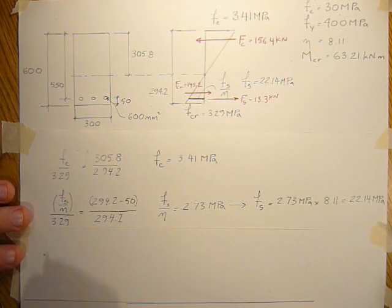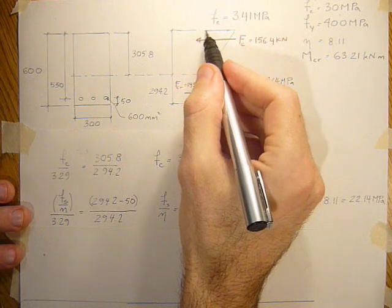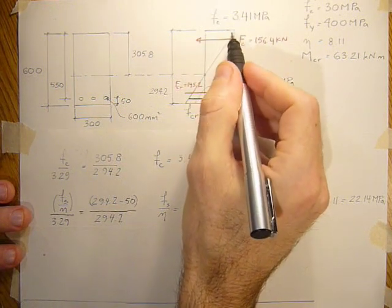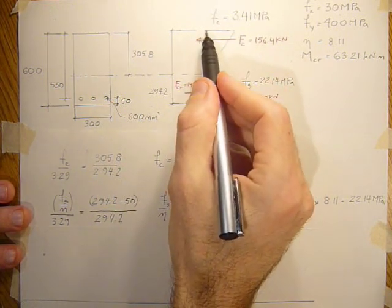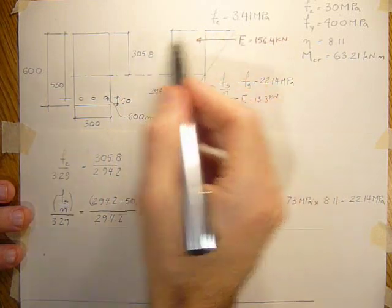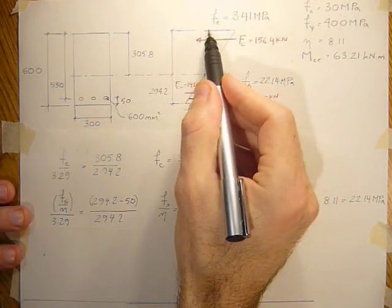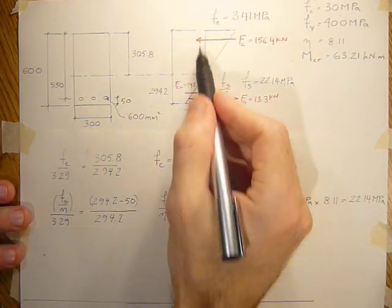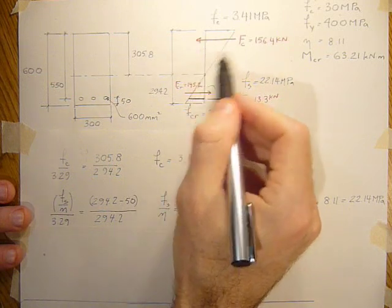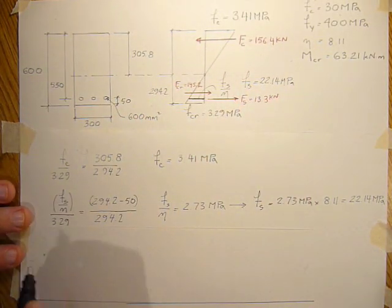So if we take forces now we find the force above the neutral axis in the concrete. That'd be really this triangle times the width. So 3.41 MPa times 305.8 times a half because it's a triangle times the width of the section.